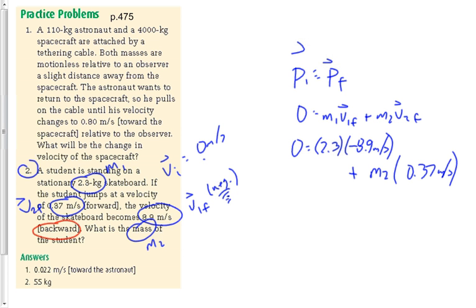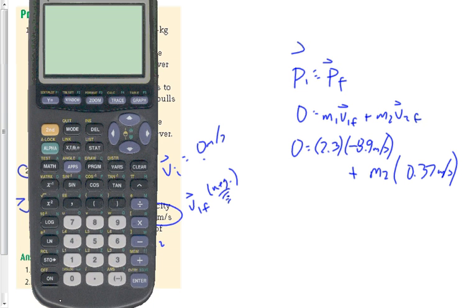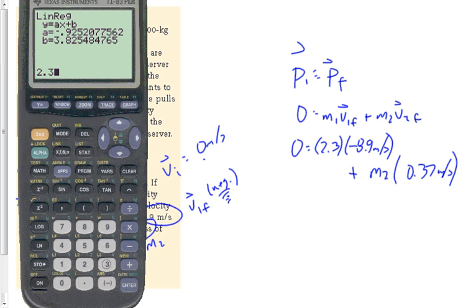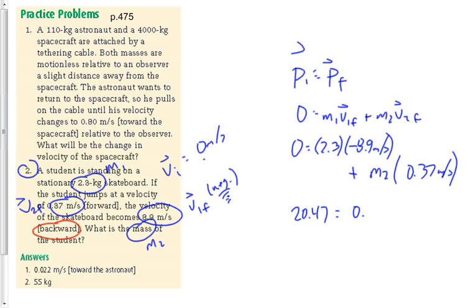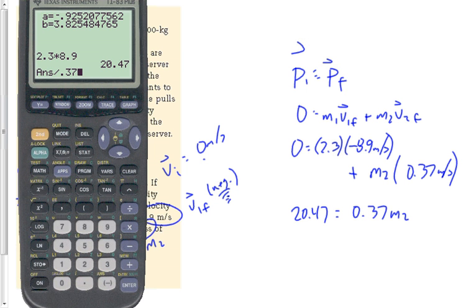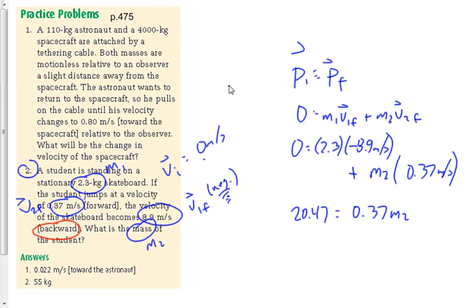This is actually a little bit easier than that car-truck question yesterday — we're solving for a mass instead of a velocity, and it's not a total mass from which I have to subtract something else. 2.3 times 8.9 gives 20.47, which moves to the left-hand side as a positive value. Dividing by 0.37 gives 55.3 — rounded to two digits, that's exactly 55 kilograms, which matches the answer key.